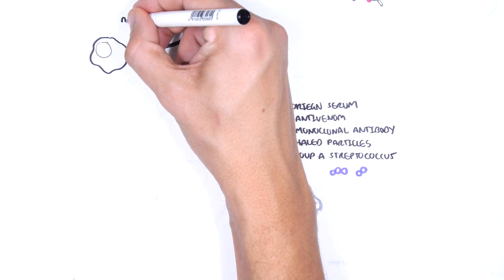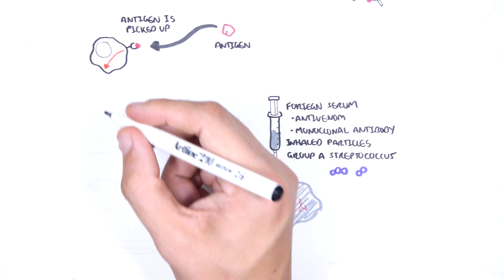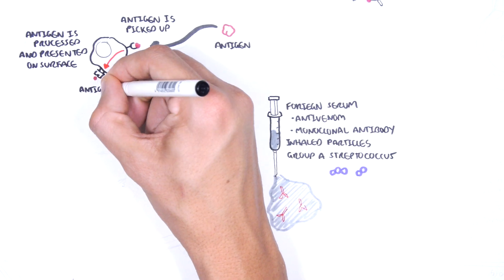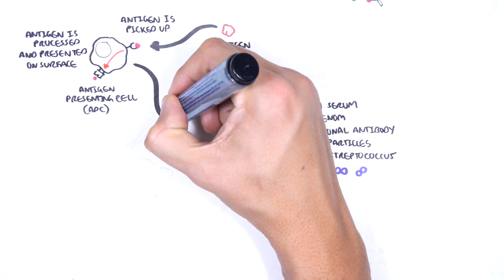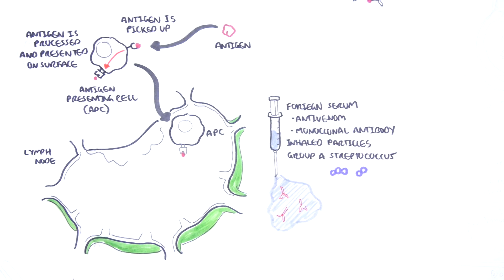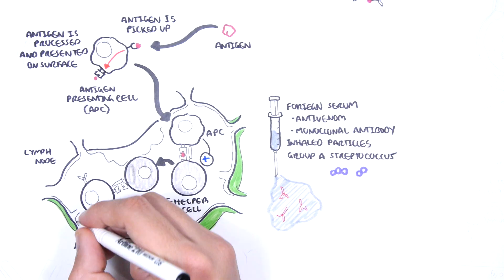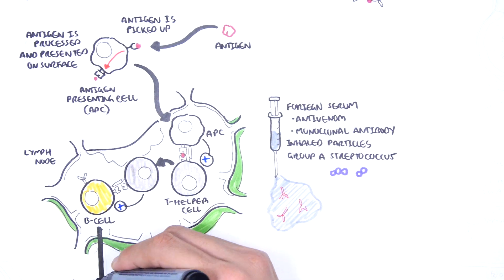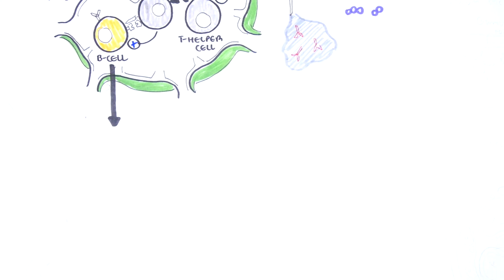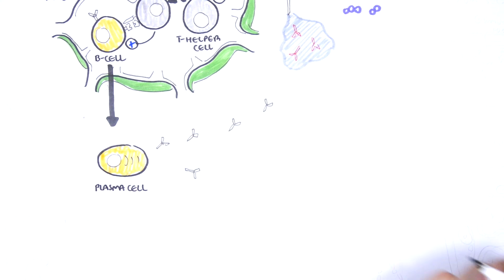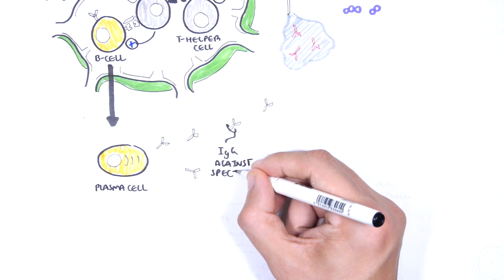These external antigens are picked up by antigen-presenting cells such as circulating B cells or macrophages, which process and express the antigen on their surface. The antigen-presenting cell travels to nearby lymphoid tissue and presents the antigen to T-helper cells, subsequently activating them. Activated T-helper cells can then activate B cells, which become plasma cells — the antibody-producing cells — generating antibodies specific to that antigen.